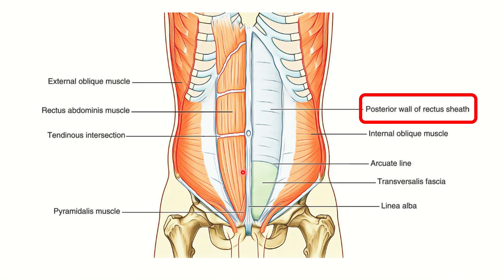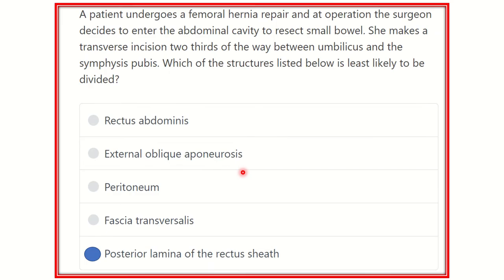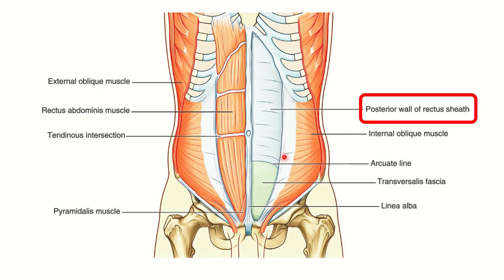To answer this, we consider the abdominal wall layers at the two-thirds and one-third junction between the umbilicus and symphysis pubis. The eight layers of the abdominal wall are: skin, superficial fascia, external oblique muscle, internal oblique, transversus abdominis, fascia transversalis, and parietal peritoneum. The internal oblique and external oblique are present at this level.